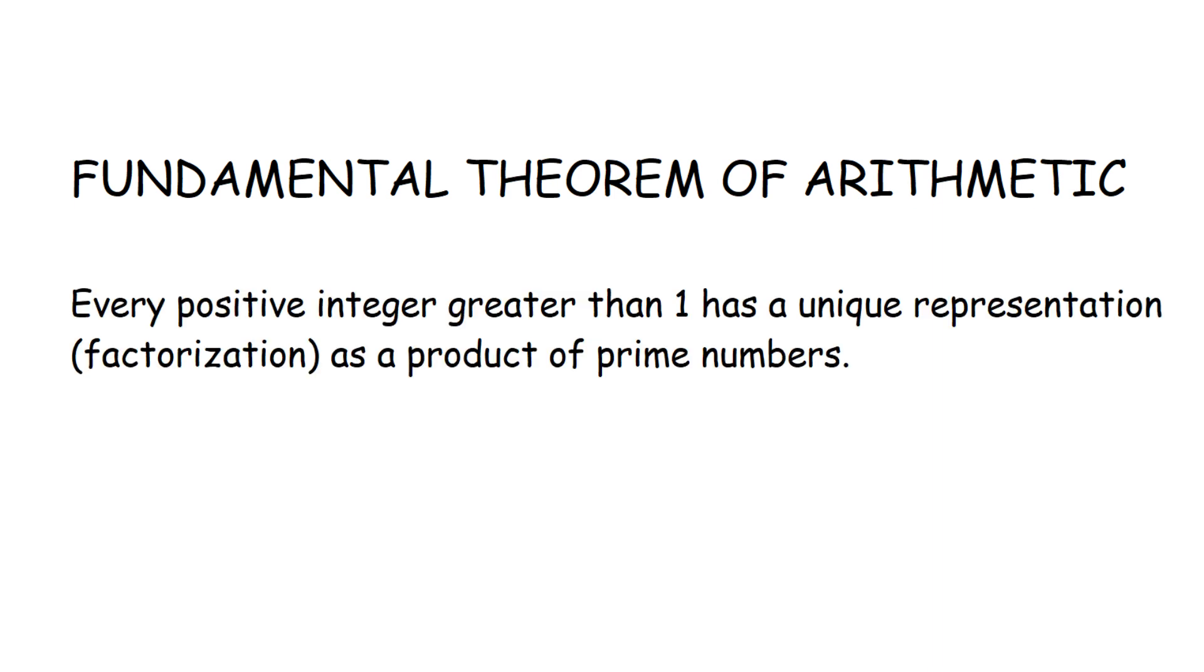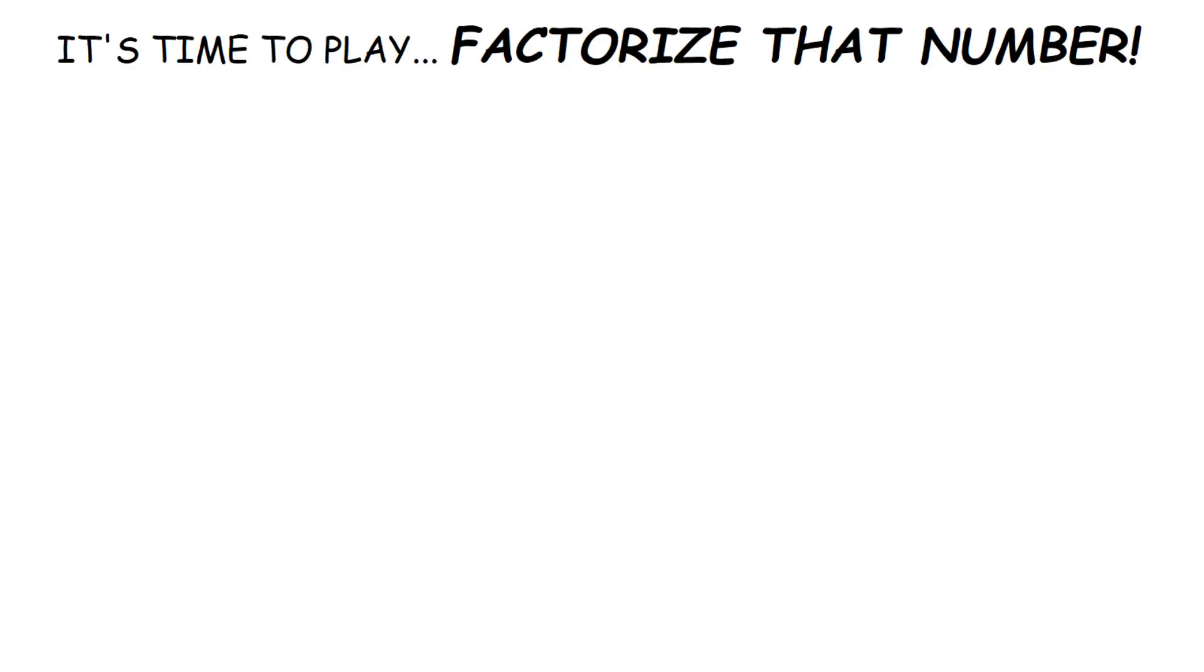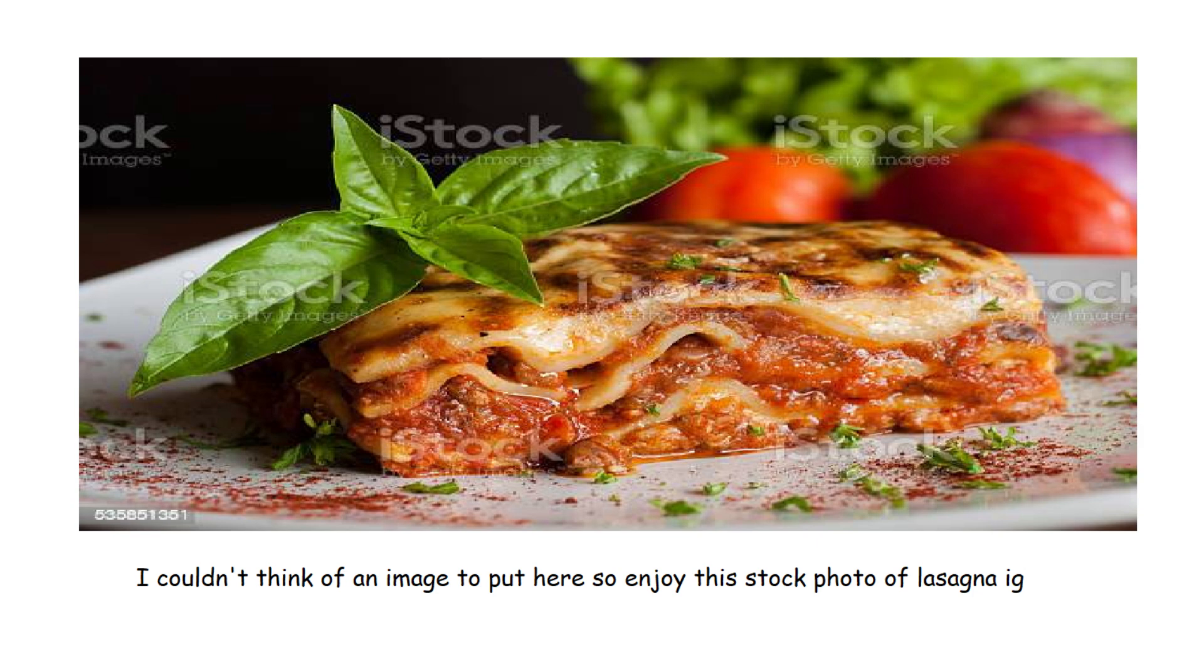It states that every positive integer greater than 1 has a unique representation as a product of primes. For example, 2 is equal to 2. Wow, how shocking. 6 is equal to 2 times 3. 12 is equal to 2 times 2 times 3. And the number that I know you've been dying for me to talk about, 45,462,167 is equal to 163 times 278,909. They all have a unique representation as a product of primes.